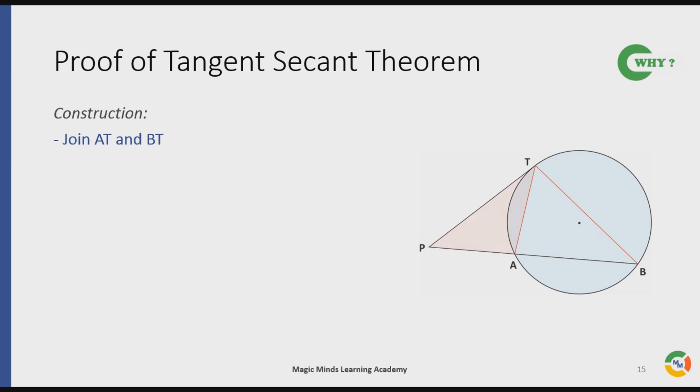Triangle PTA, that is the one shown in red color here, and triangle PTB, that is the one now shown in red color here. Now consider these two triangles. In these triangles, angle TPA is equal to angle TPB.